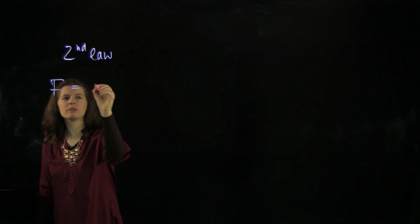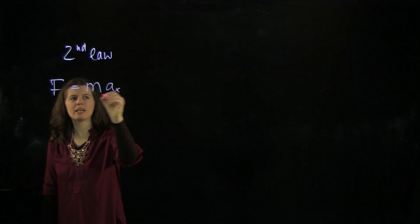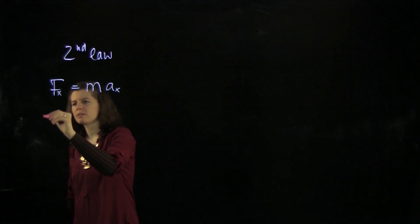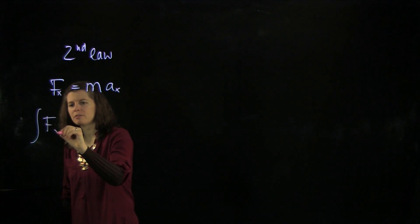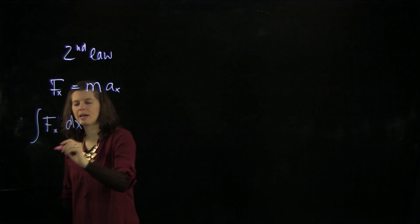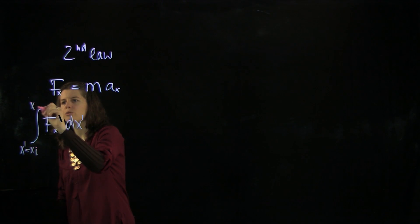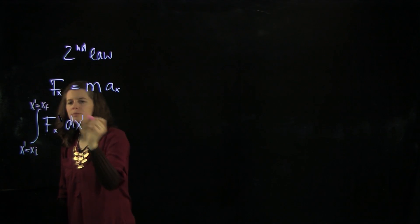So F equals ma, and we're going to take the x component of that. Now we're going to integrate this: F dx prime, and it runs from x prime equals x initial to some final value.